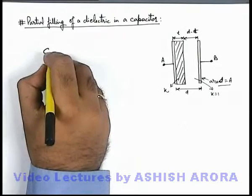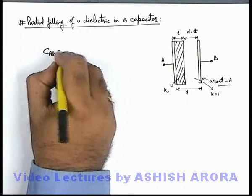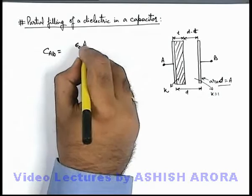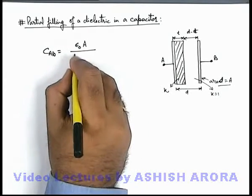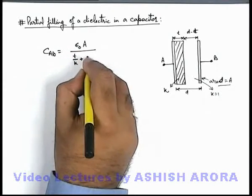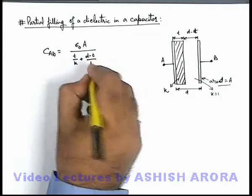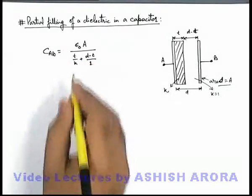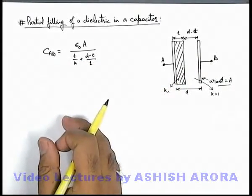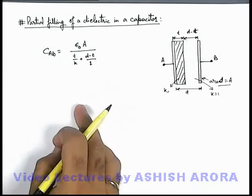So in this situation, the equivalent capacitance across the terminals A and B we can write as epsilon not A divided by t by k plus d minus t by 1. This was the relation we have studied for parallel filling of dielectric slab parallel to the plates of capacitor.